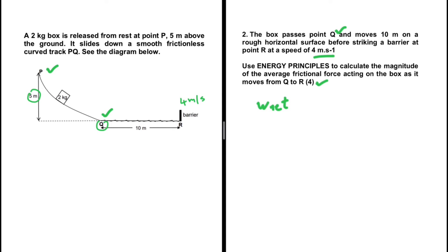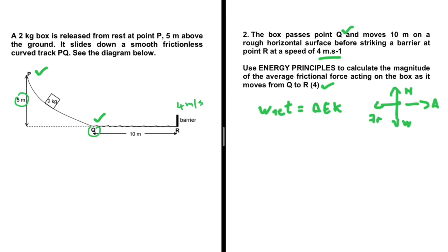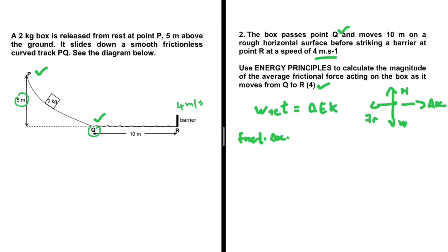Using the work-energy theorem: W_net = ΔKE. Sketching a free body diagram, the object has a frictional force, normal force, and weight, moving horizontally. The normal force does no work (angle = 90°) and the weight does no work (angle = 270°, cos 270° = 0). The only force doing work is the frictional force.